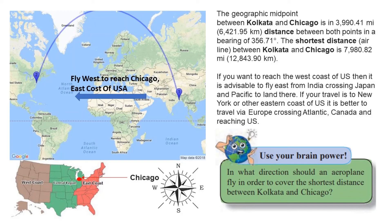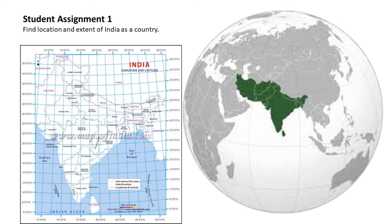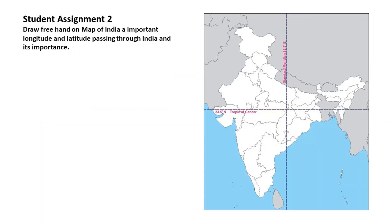Activity: Find the location and extent of India as a country and comment the answer below. Also, draw a freehand map of India showing its important longitudes and latitudes passing through it and their importance.